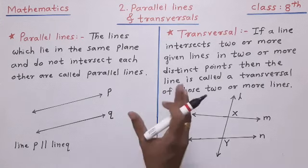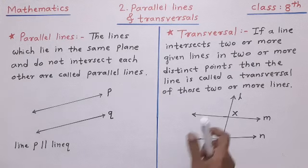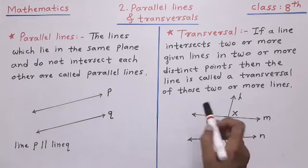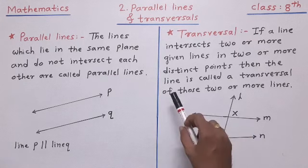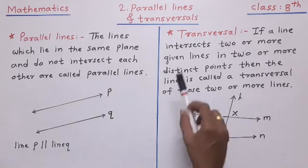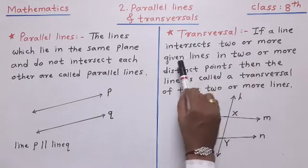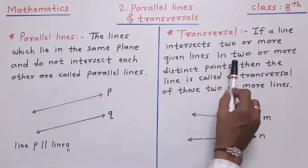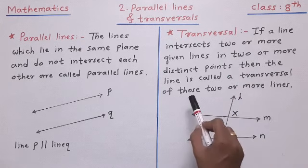Now let us see what is meant by transversal. If a line intersects two or more given lines in two or more distinct points, then the line is called the transversal of those two or more lines.